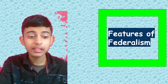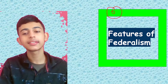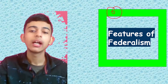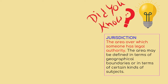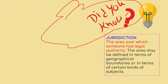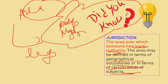Now let's move on to the features of federalism. First, you have to understand the word 'jurisdiction' because it will be used frequently. Jurisdiction is an area or territory where you have some legal authority. The area may be defined in terms of geographical boundaries or certain kinds of subjects — it is the area where you have your legal authority.